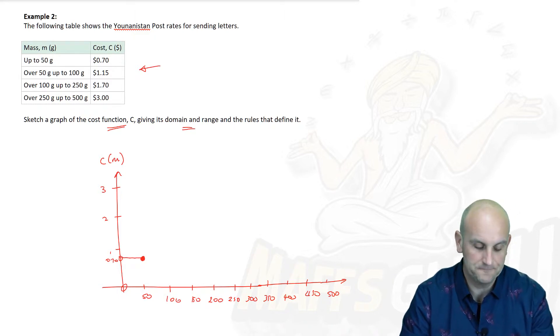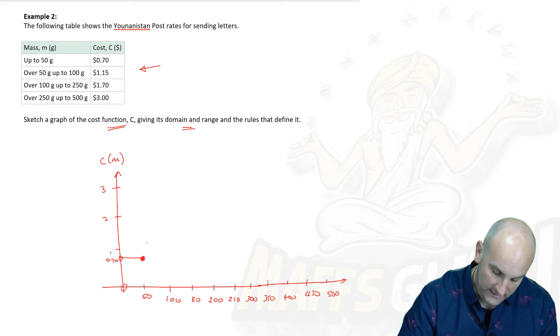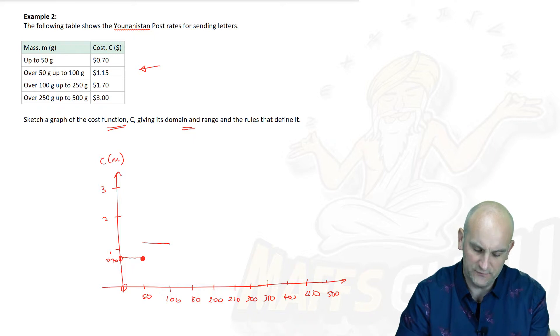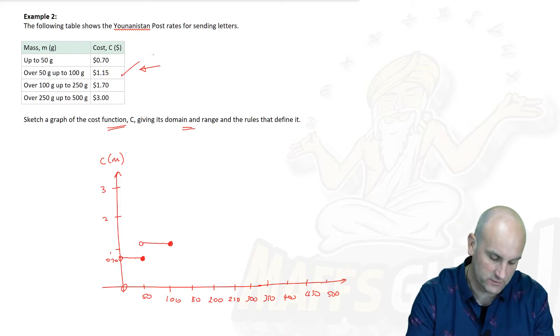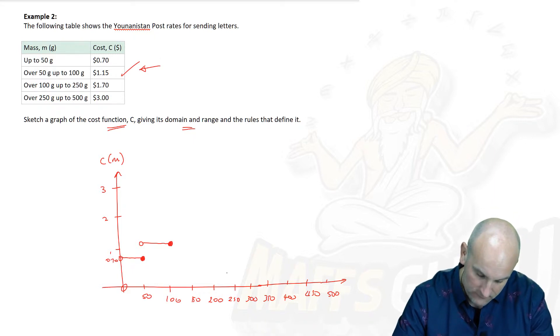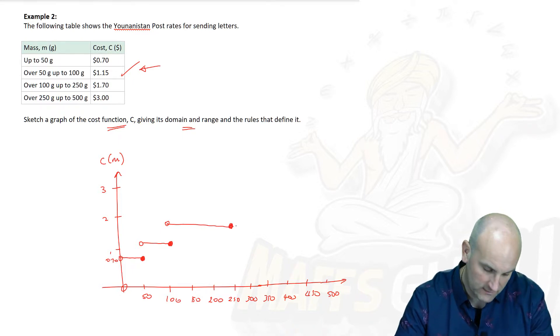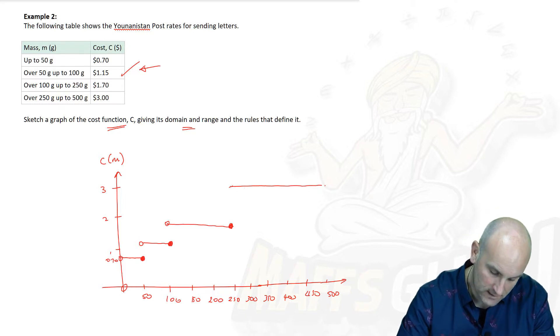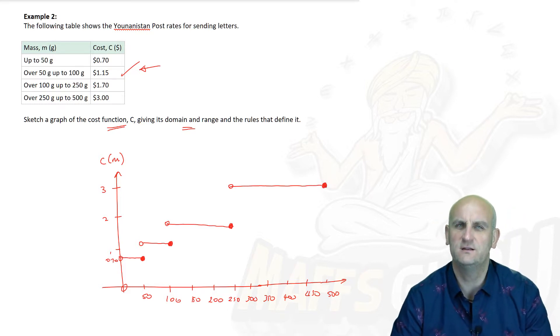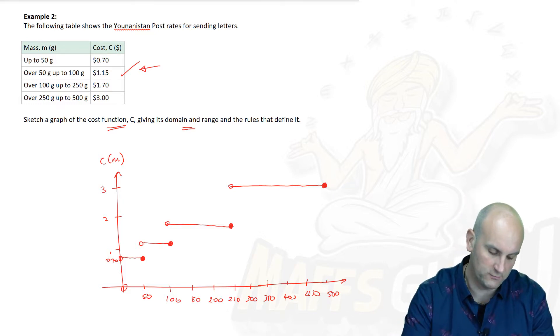Over 50 grams, which means it's not included, up to 100 grams is $1.15. So let's draw my line between 50 and 100. Which is 50 included? No, it isn't. So there's my open circle. But we know that 100 grams is included, filled in circle. $1.70 over 100 grams, up to $2.50. So $1.70, let's say roughly speaking there, all the way over to $2.50. There's my straight line. So we are not including that open circle, but we are including that closed circle. And finally, over 250 grams and up to 500 grams. And there we go, ladies and gentlemen, we have drawn my graph cost function.